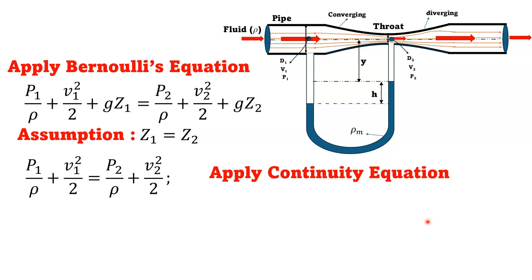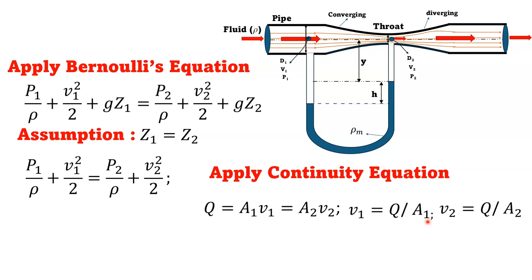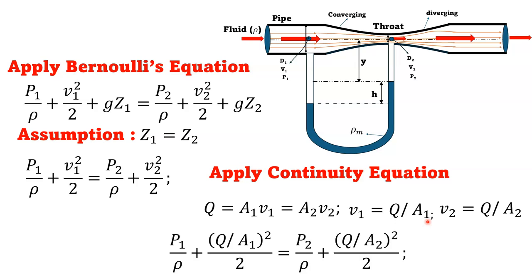Now applying the continuity equation: Q = A1·V1 = A2·V2, so V1 = Q/A1 and V2 = Q/A2. Substituting V1 and V2 into the Bernoulli equation gives: P1/ρ + (Q/A1)²/2 = P2/ρ + (Q/A2)²/2.